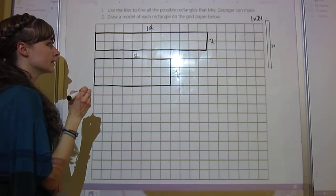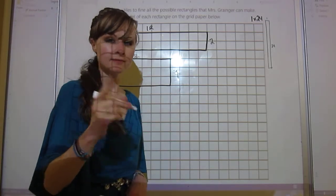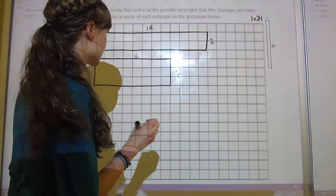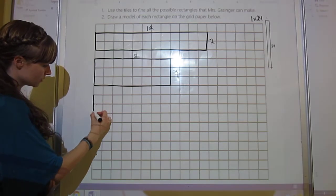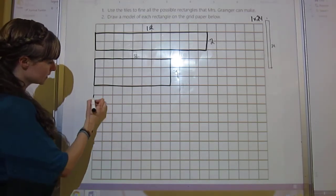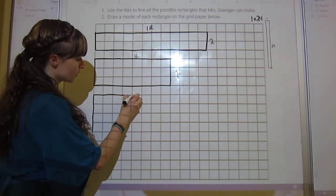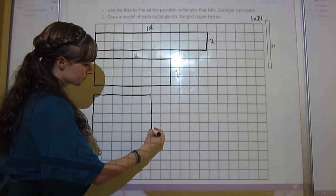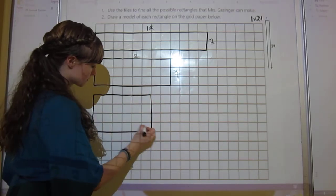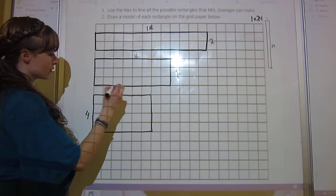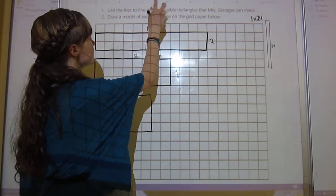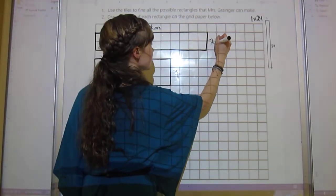Now let's think: can I do 4? Yeah, 4 times 6. So then I go 1, 2, 3, 4, and then 1, 2, 3, 4, 5, 6. I label 4 and 6. And this is going to be meters, so I need to make sure that I put meters on all of these.